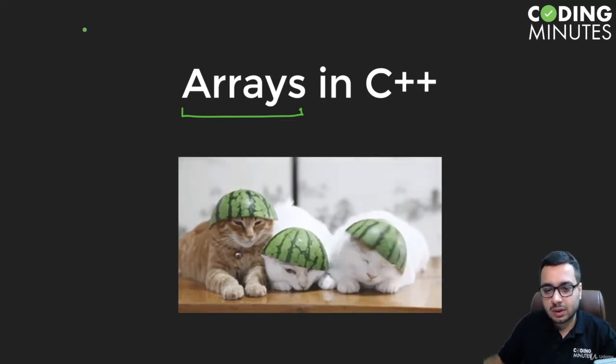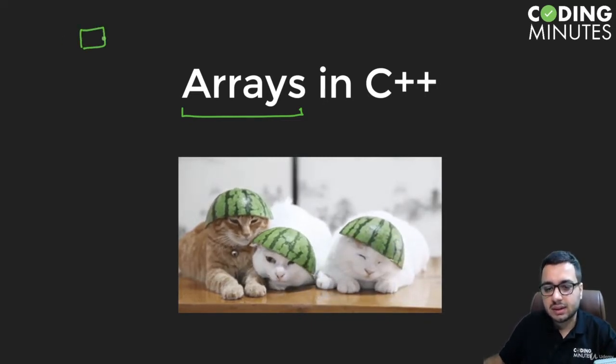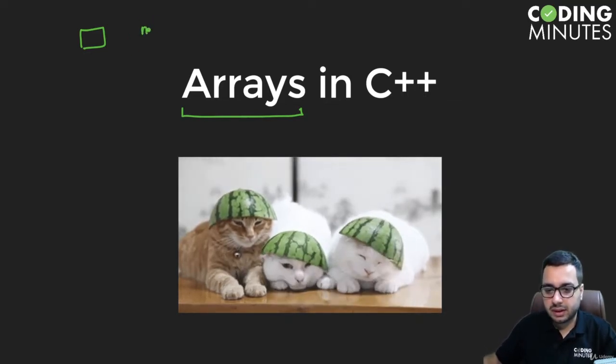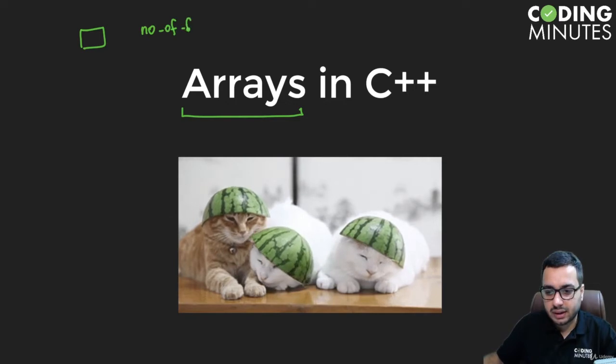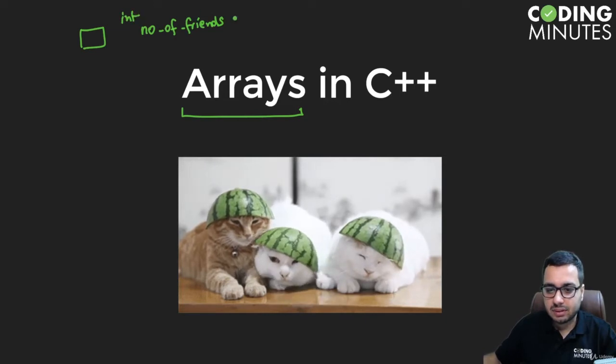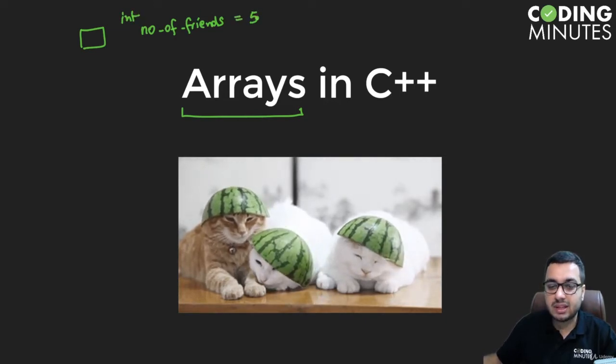You must have learned about a variable in a programming language. A variable is a bucket that stores some data. For example, I want to store the number of friends I have. I can create a variable of the type integer and this variable will store, okay I have five best friends, so it will store this inside a particular memory.